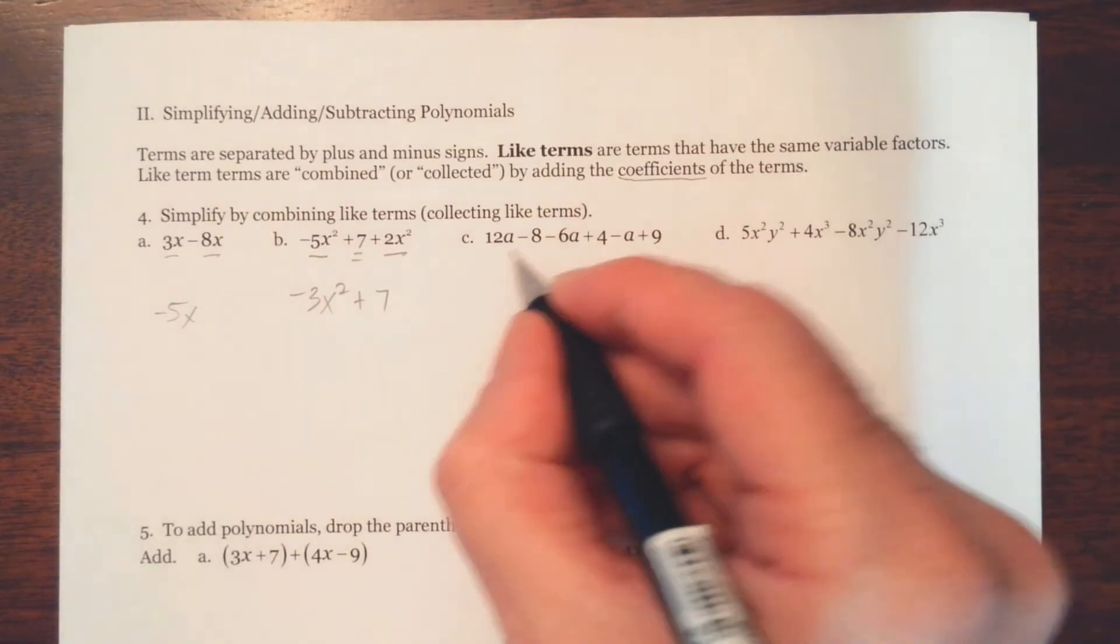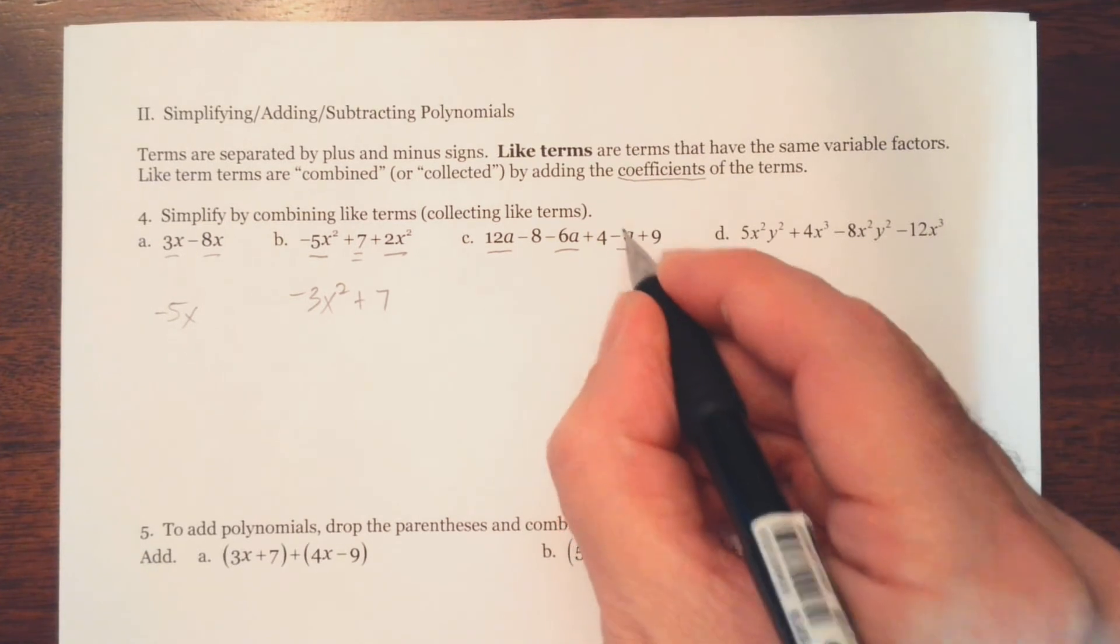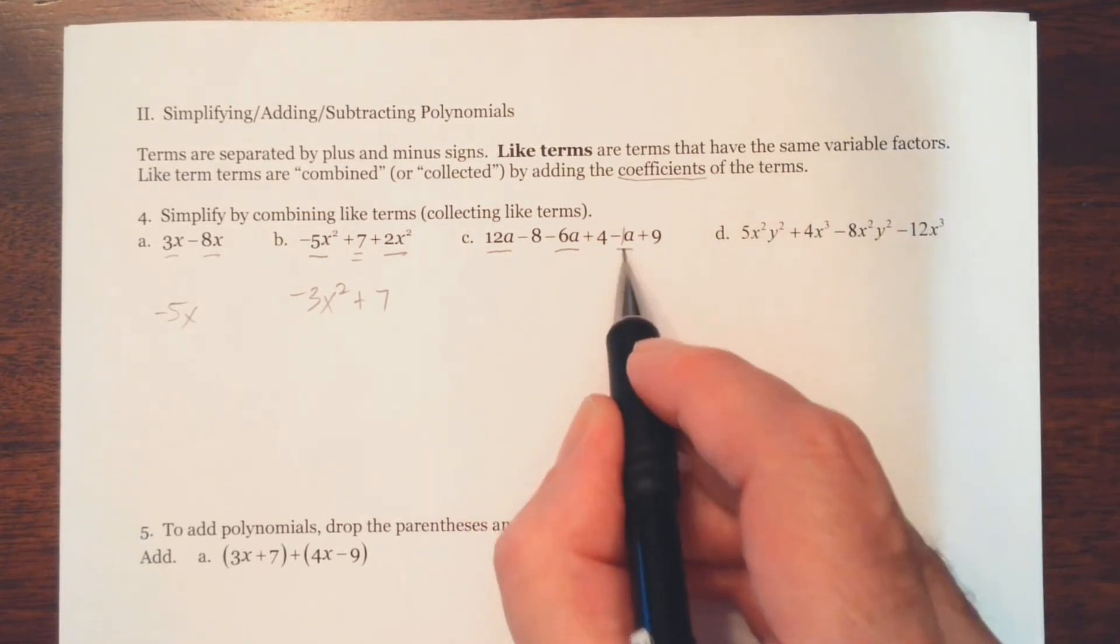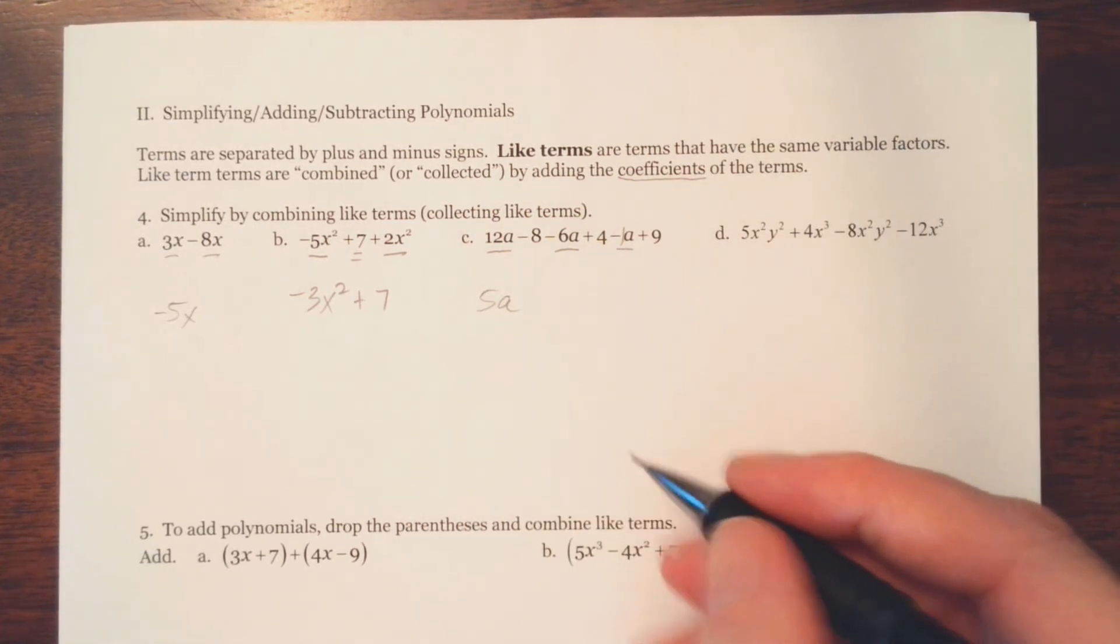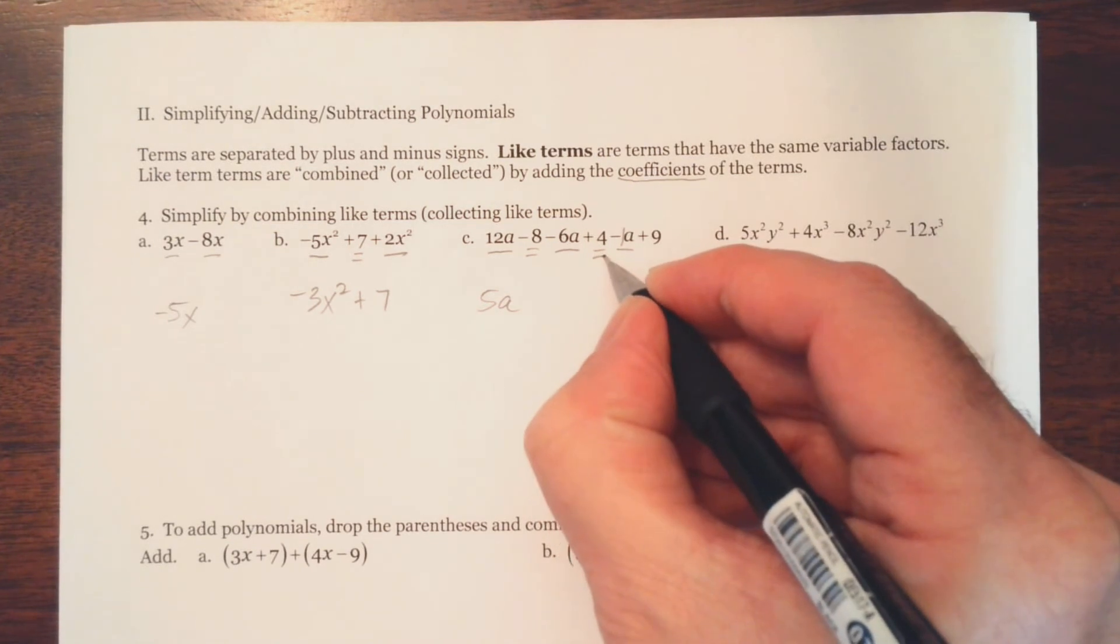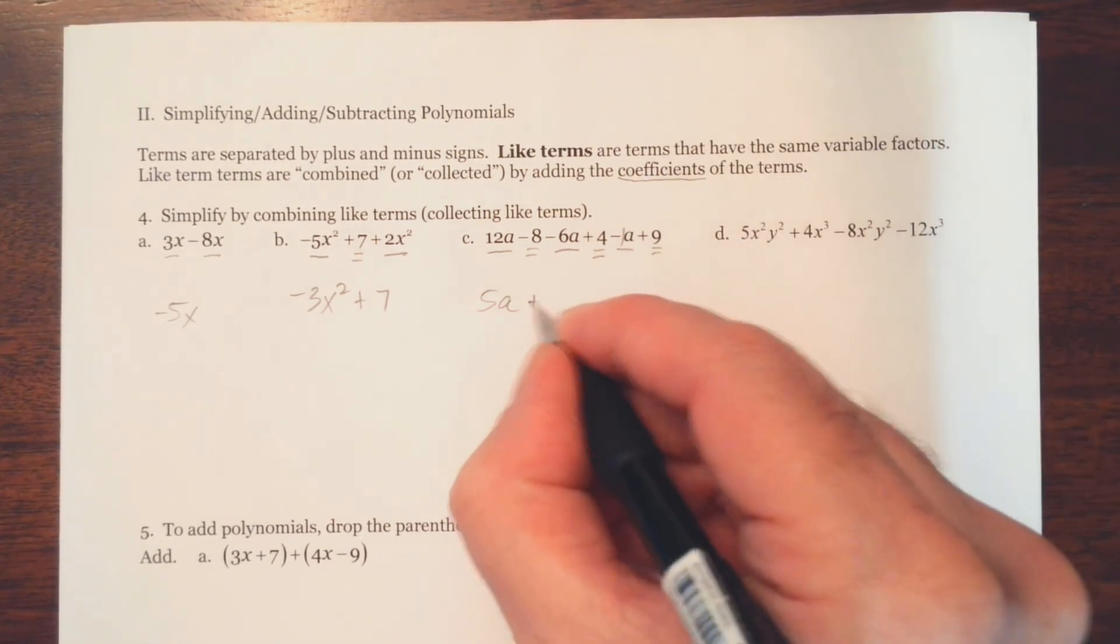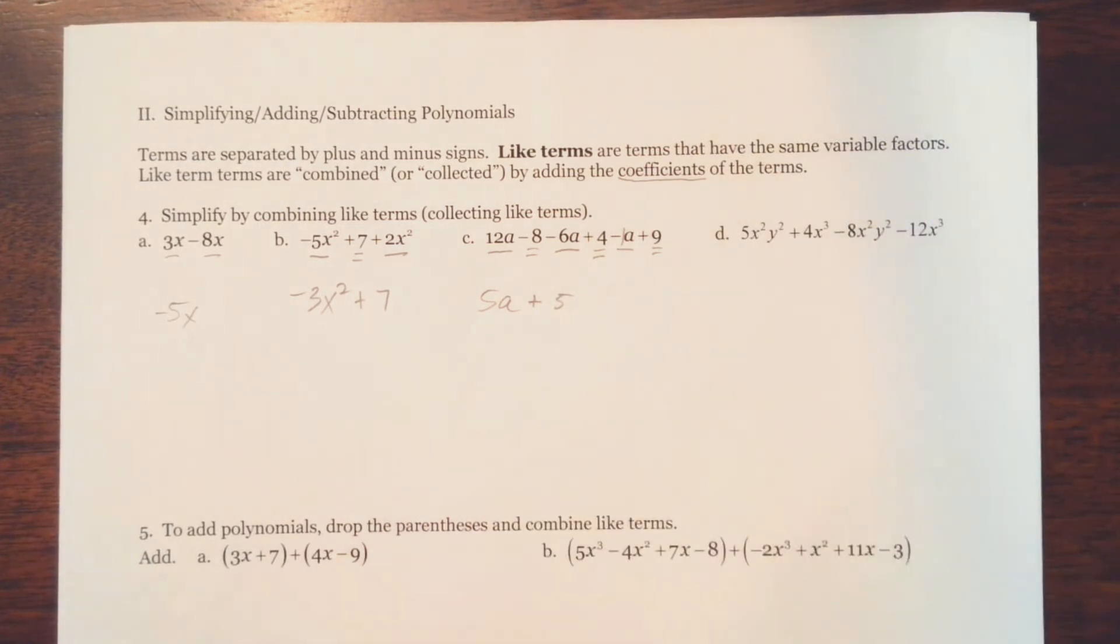On letter C, notice you have 12a and a minus 6a and a minus 1a. So 12 minus 6 is 6, minus 1 is 5. So we have 5a. And then notice we've got a minus 8 and plus 4, that's negative 4. Plus 9, that's going to be plus 5. So we end up with 5a plus 5.